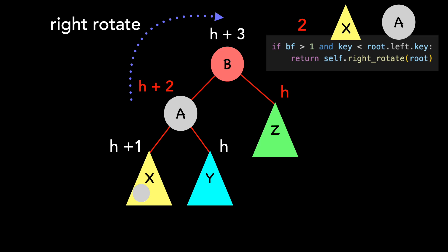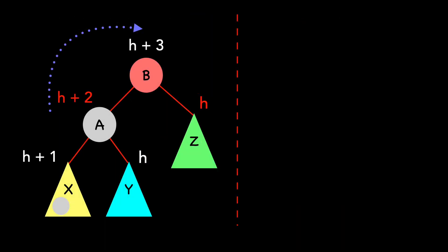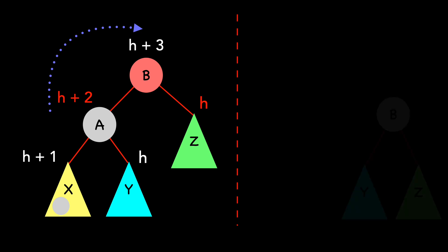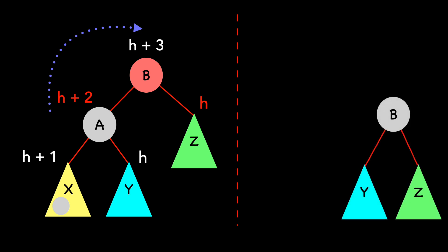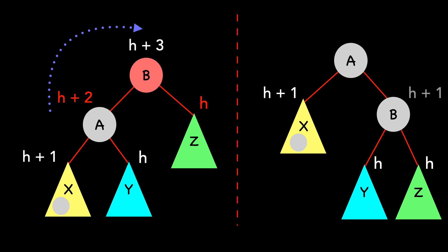I'll move the tree over to the left and demonstrate this. Let's first move B and Y becomes this new left child. We move A and make it B's parent. We'll fill in our height values, starting from the bottom and working our way up. Note that we already added 1 to the height of X after adding the new node. We calculate B's height, and since Y and Z are both H, B is H plus 1.